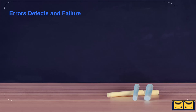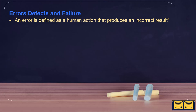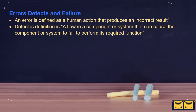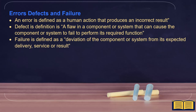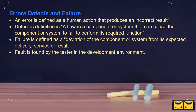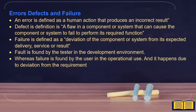We covered errors, defects, and failures. An error is defined as a human action that produces an incorrect result. A defect is a flaw in a component or system that can cause the component or system to fail to perform its required function. Failure is defined as a deviation of the component or system from its expected delivery, service, or result. A fault is found in the development environment, whereas failure is found by the user in operational use due to a deviation from the requirement. The fault is a cause of the failure.